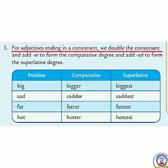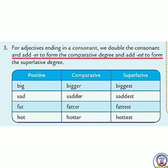Now, for adjectives ending in a consonant, we double the consonant and add ER to form the comparative degree and add EST to form the superlative degree. Agar adjective jo hai, woh consonant se poora hota hai, toh hum jo last letter diya hota hai positive degree mein, usko double karenge aur ER comparative mein add karenge aur superlative mein woh consonant jo diya hota hai usko double kar ke EST add kar denge.